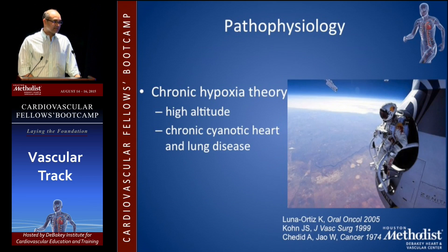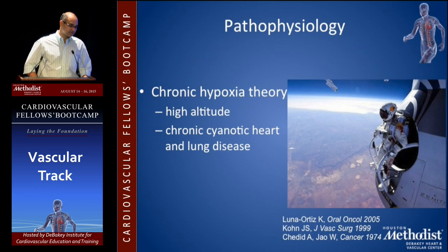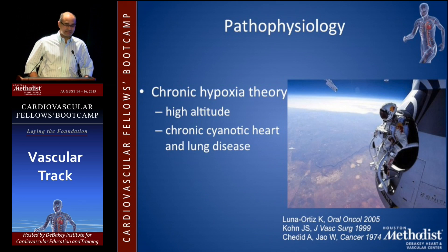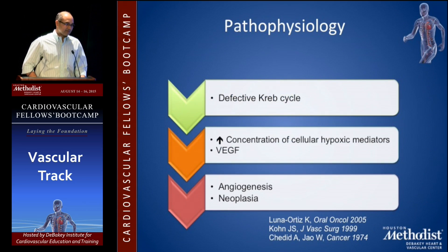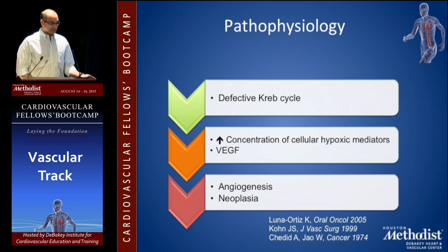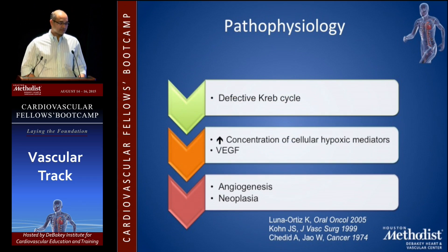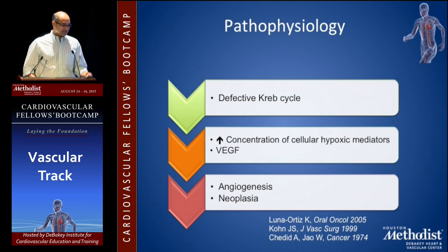Pathophysiology: chronic hypoxia is a theory. People living at high altitudes, those with COPD, or chronic cyanotic heart disease are at slightly higher risk. The reason is a defective Krebs cycle that causes increased concentrations of hypoxic mediators and VEGF, causing angiogenesis and neoplasia in the carotid body.